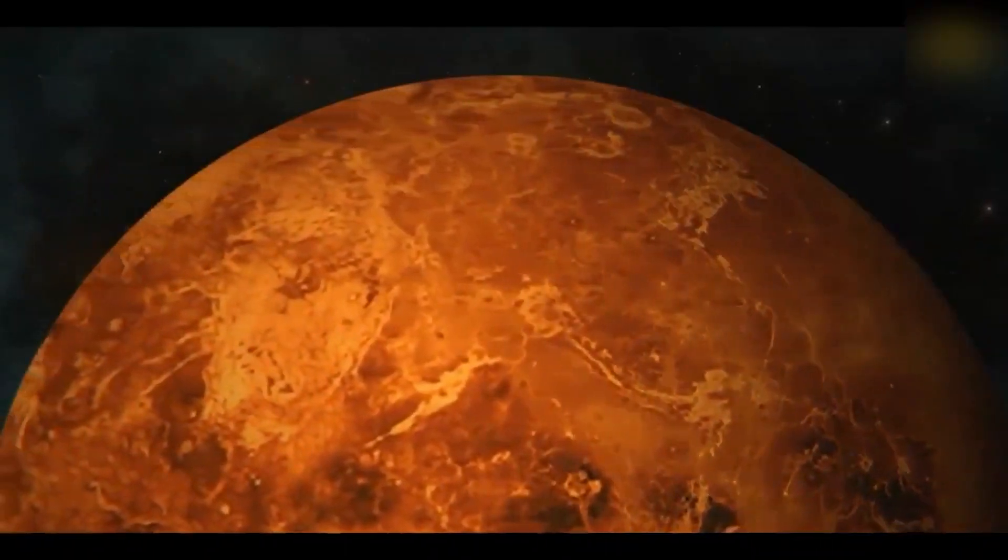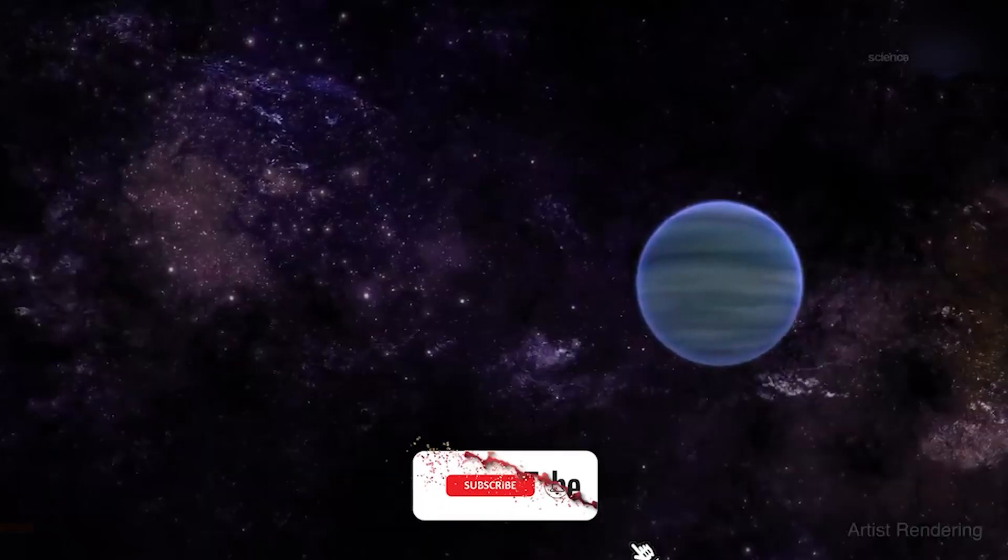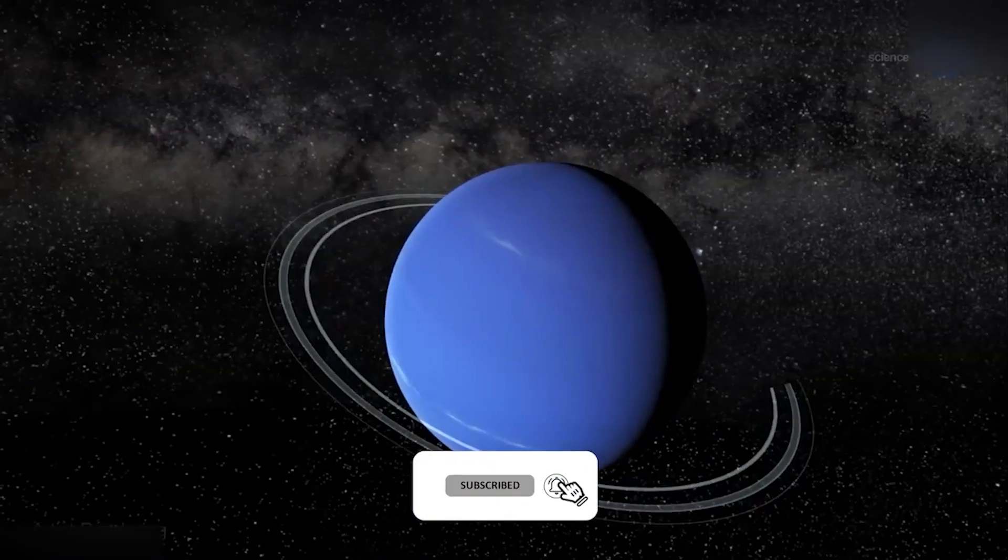These planets, which are often exoplanets or extrasolar planets, are located outside the solar system. Therefore, don't be surprised to see some strange names of these planets in the rest of the video.